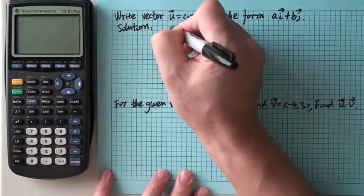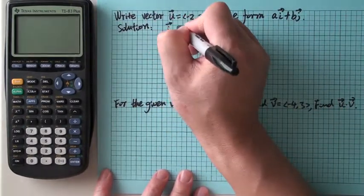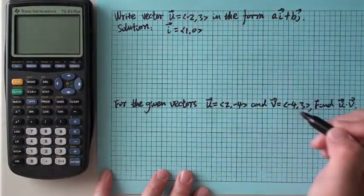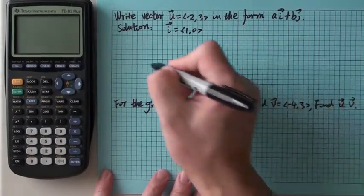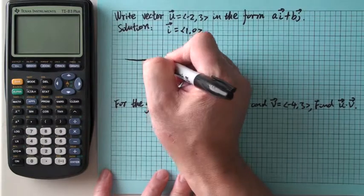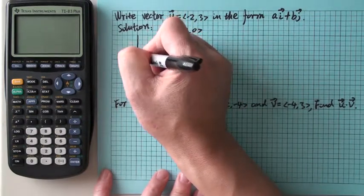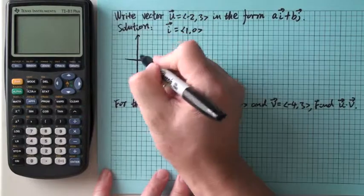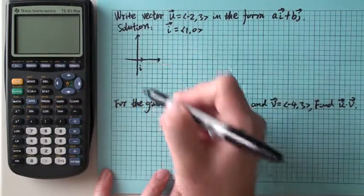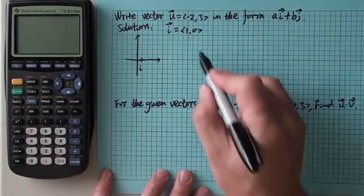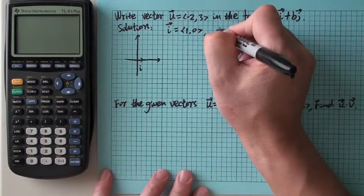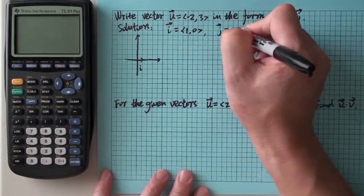First, we need to know ī, this vector, is ⟨1, 0⟩. What's the meaning of ⟨1, 0⟩? That's right here. In this vector plane, here is ī, x-coordinate is 1, y-coordinate is 0.